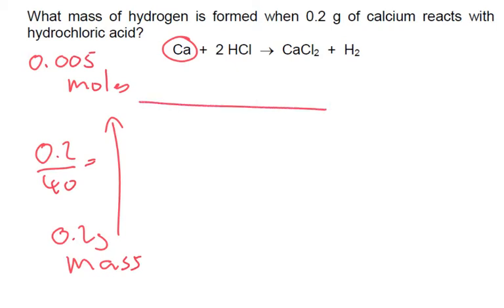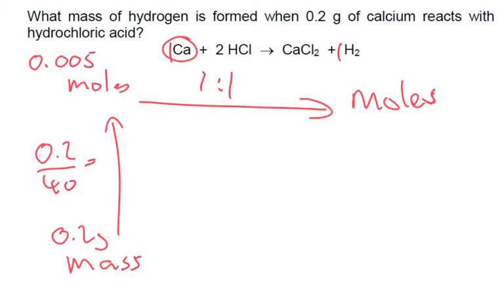Moving over — how many moles of hydrogen do we therefore have? Let's look at the ratio: it's 1 to 1. That's nice and easy, so we've got 0.005 moles on this side too.